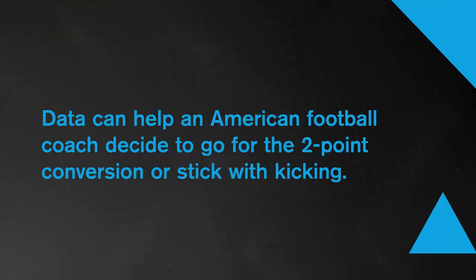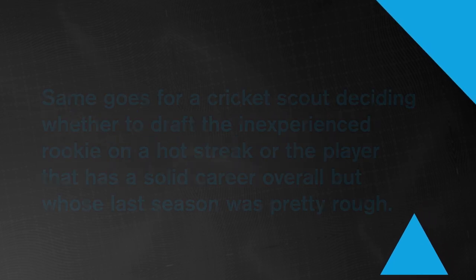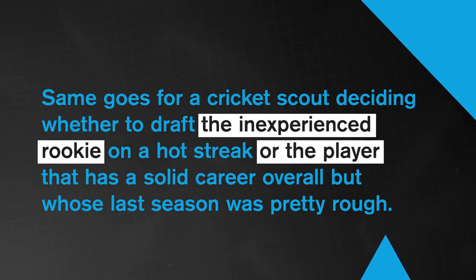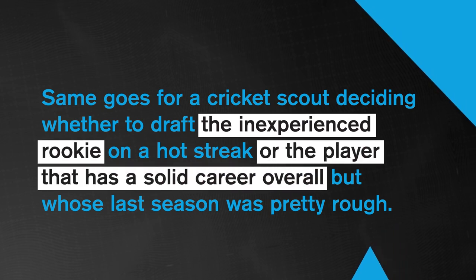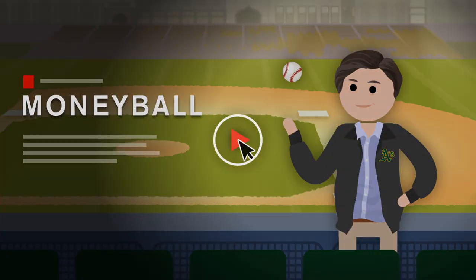And if you're one of those people whose eyes glaze over when a game is on, this episode is still for you. The sports industry itself has plenty of data drama. People with authority, like team coaches and owners, use data to make draft, line-up, and salary decisions. Data can help an American football coach decide to go for the two-point conversion or stick with kicking, same goes for a cricket scout deciding whether to draft the inexperienced rookie on a hot streak or the player that has a solid career overall but whose last season was pretty rough.